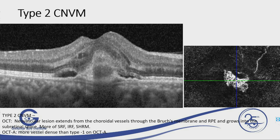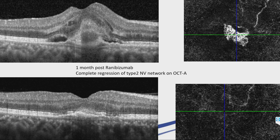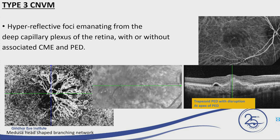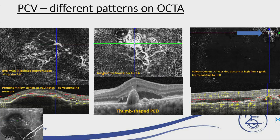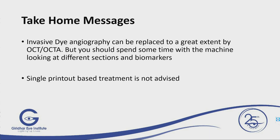This is a type 2 CNVM where there is a dense network. Pre-treatment and post-treatment monitoring shows clearly how the network has changed. This is another RAP case — pre-treatment and post-treatment show how the network reduced and became mature vessels. These are some of the key findings.